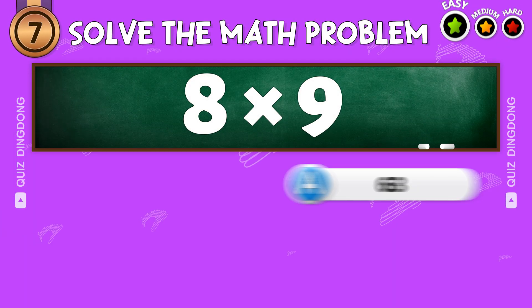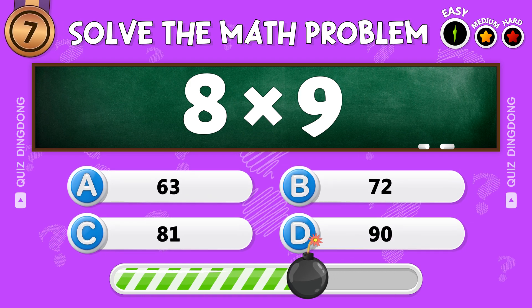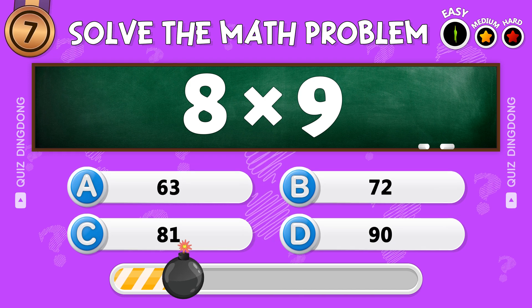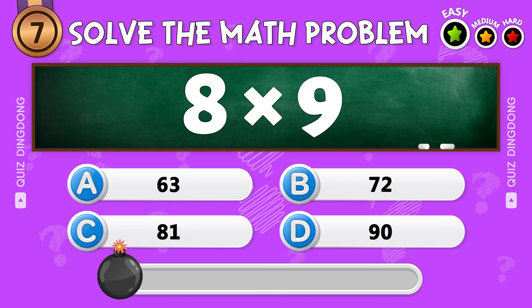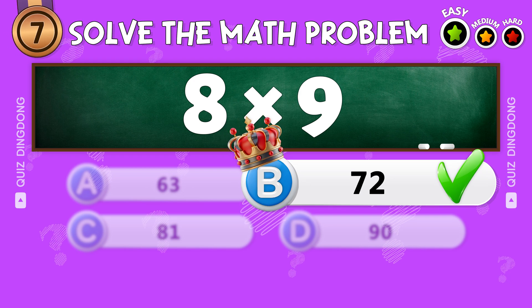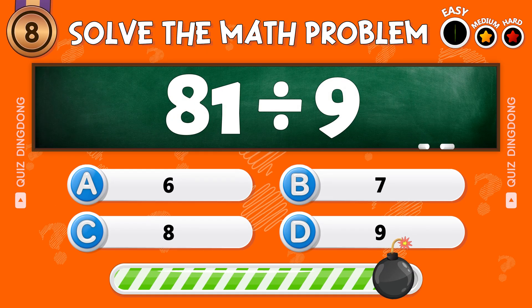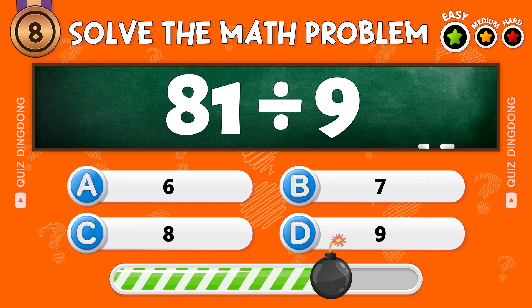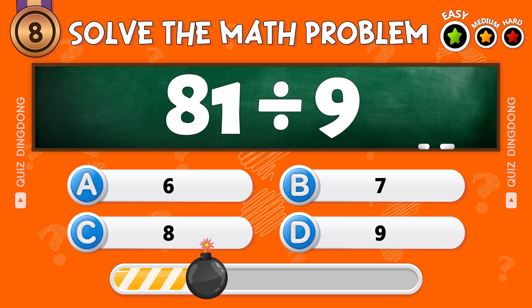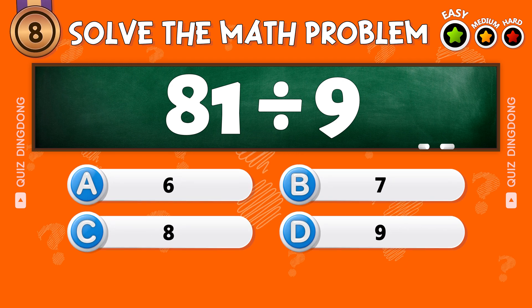What is 8 times 9? Great, the answer is 72. Next question: what is 81 divided by 9? Exactly, the answer is 9.